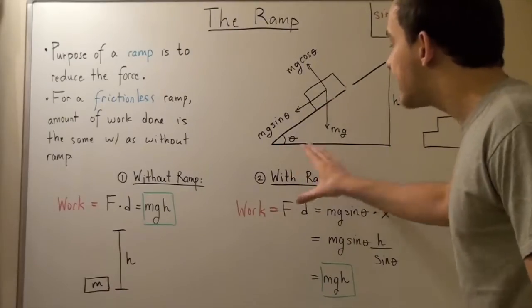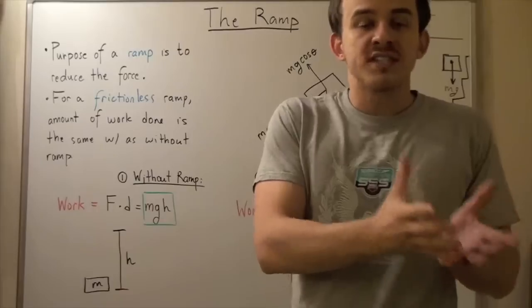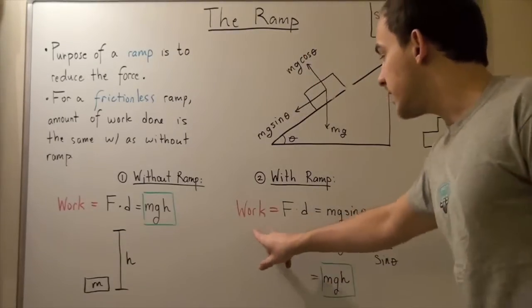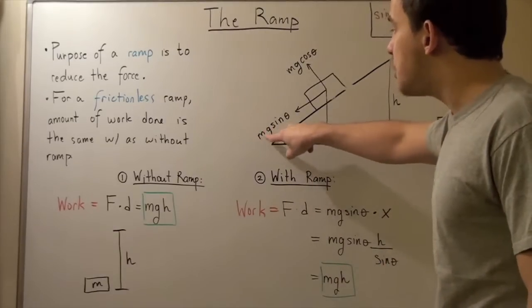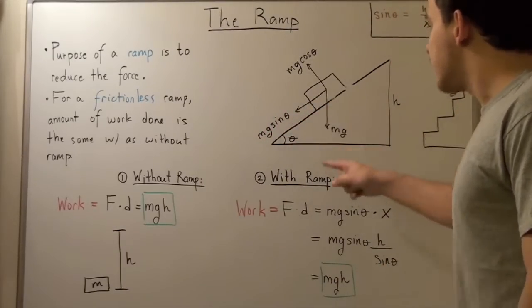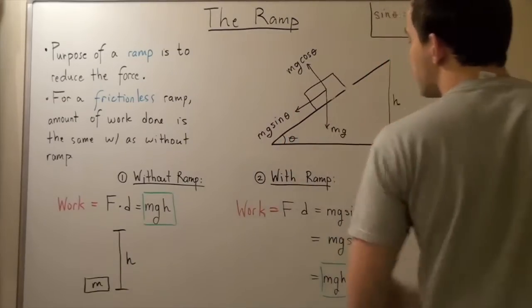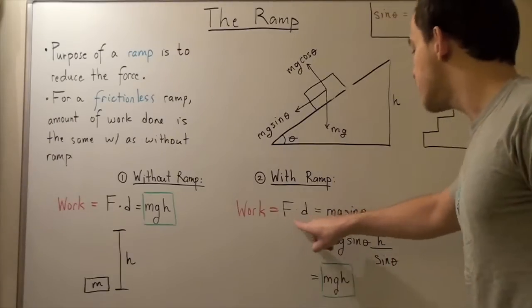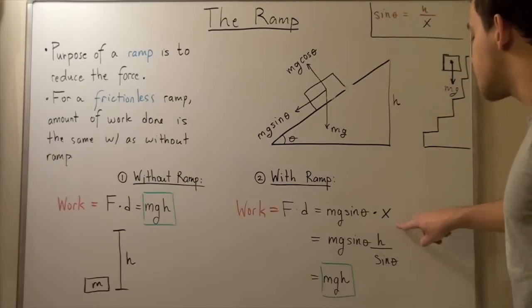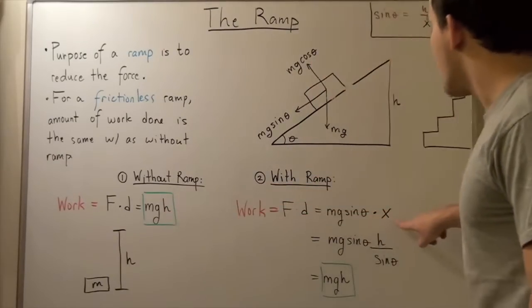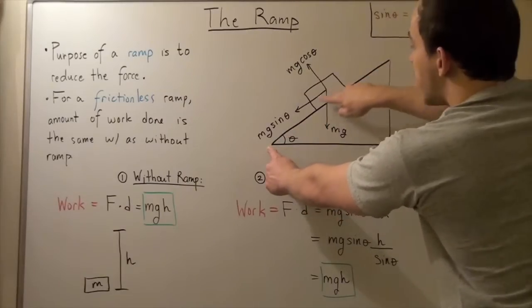What about the second case? How about if we take the ramp now? Well, for the ramp, the work stays the same. It's simply force times distance. So work equals force times distance. So what's the force? The force is mg times sine theta, because that's the force pulling you downward, and that's the force against which you have to push upward. So the force is m times g sine theta multiplied by x. So now we're not talking about h, we're talking about x, where x is this distance here. It's our hypotenuse.